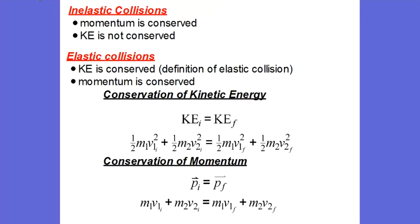Now let's look at elastic collisions in one dimension. Remember that an elastic collision is one in which kinetic energy is conserved. That means the initial kinetic energy before the collision is the same as the final kinetic energy after the collision, and here is the equation that allows us to figure out those values.